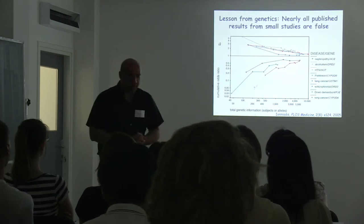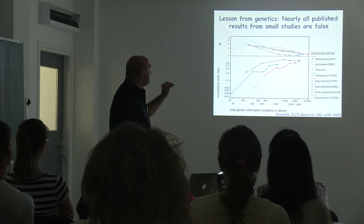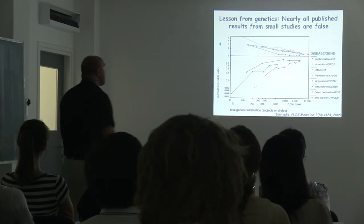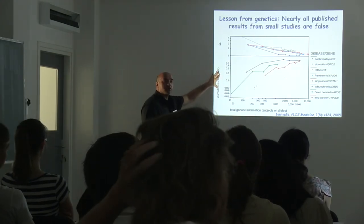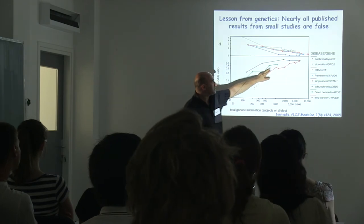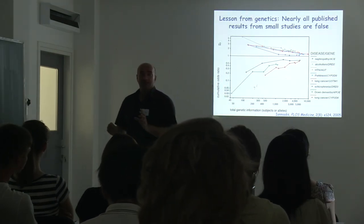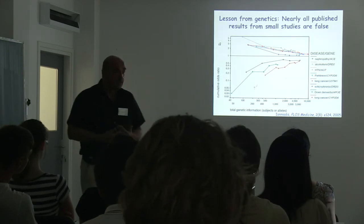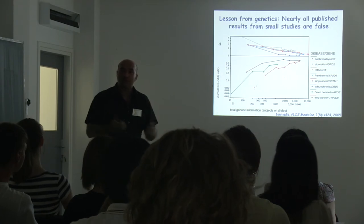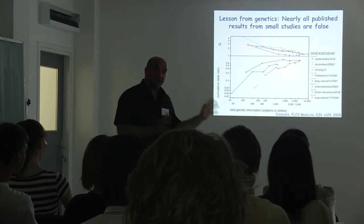This is something we should have learned from geneticists. Even 10 years ago there was a nice paper published in PLOS Medicine showing that the majority of published studies from small studies report false data. This shows the odds ratio for a specific genetic locus and specific trait: initial publication followed by replications, where the effect is lost — again and again. All the published effects are lost through replication, meaning they are not real. These types of papers just burden the literature.